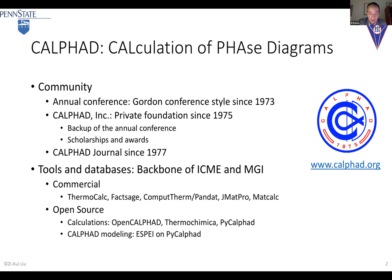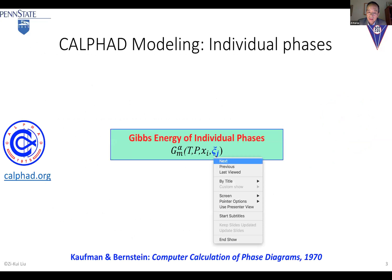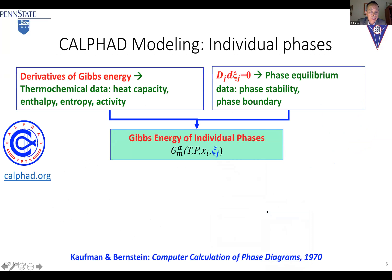One key point about CALPHAD modeling is that we basically model the Gibbs energy as a function of temperature, pressure, and composition. But very importantly, it's also modeling of Xi — that's the internal degree of freedom — which is very unique for non-equilibrium thermodynamics. You want to have accurate data: you can take DFT data, which provides derivatives of the Gibbs energy — heat capacity and interoperability/activity. Experiments only give you the stable phases, while DFT gives you the metastable and even unstable ones.